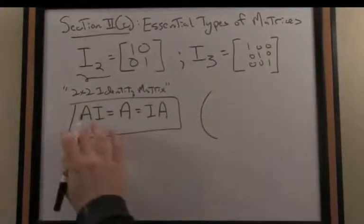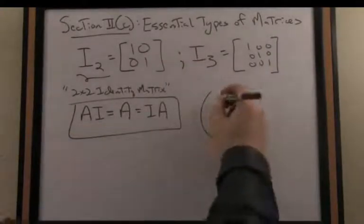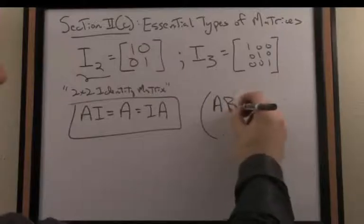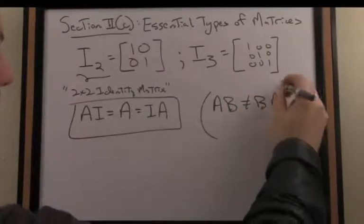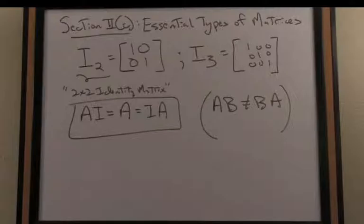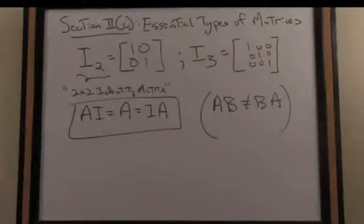It's important to note that even though the identity matrix is commutative by multiplication with any matrix, in general, of course, matrix multiplication is not commutative.